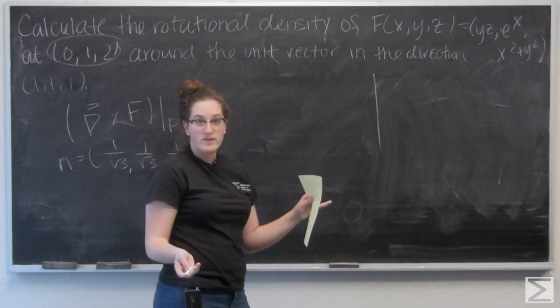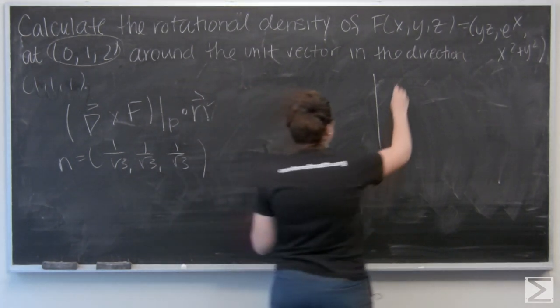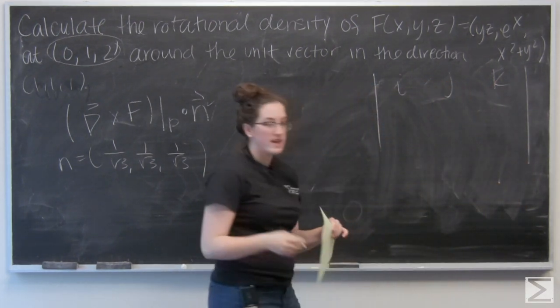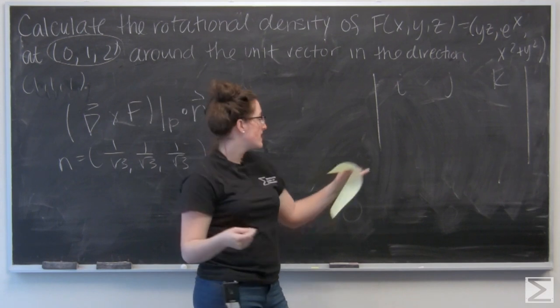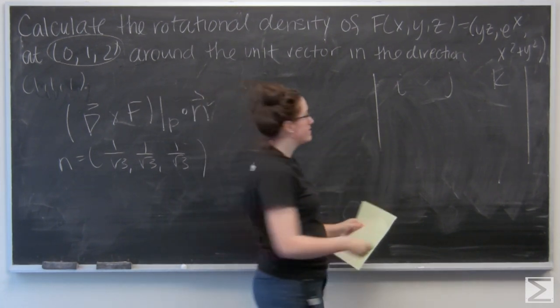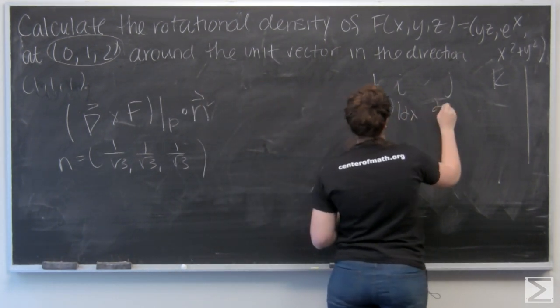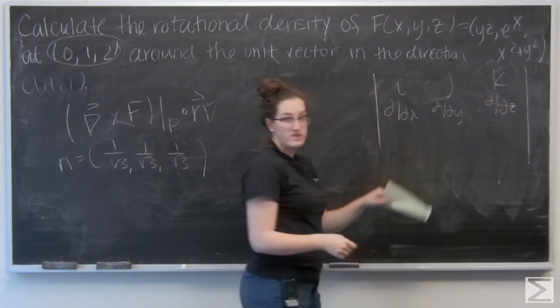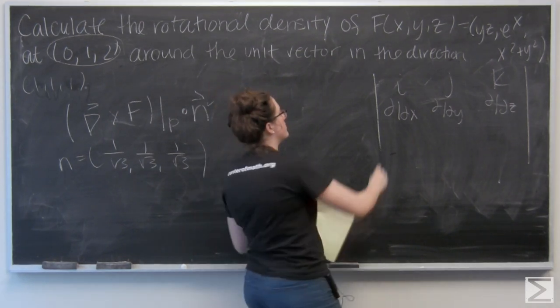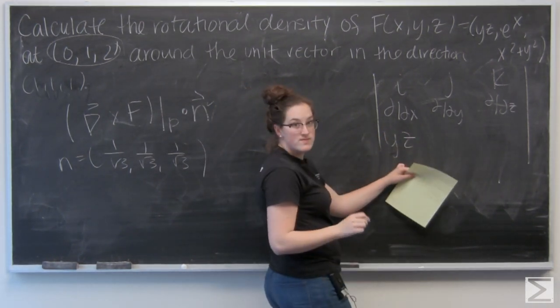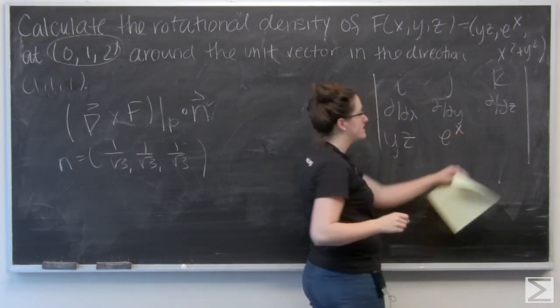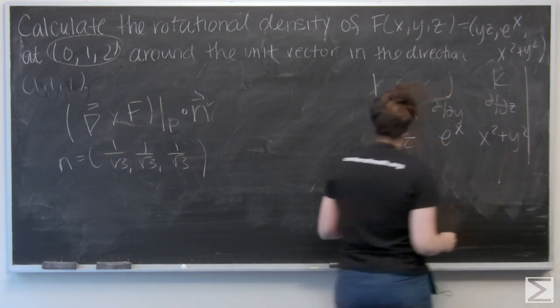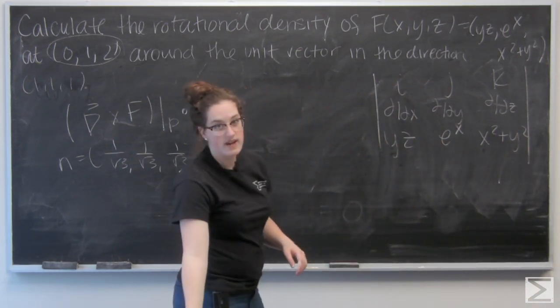So the first row of the matrix is just going to be the vector components i, j, and k. And I want to think about this like a cross product of the gradient operator and f. So the second row is just going to be the gradient operators. And the third row is going to be the vector components of f, so y, z, e to the x, and x squared plus y squared.